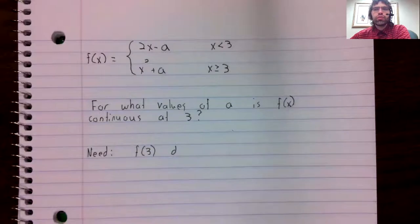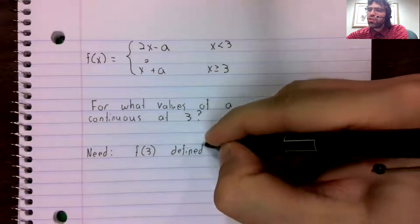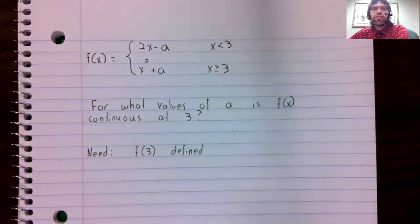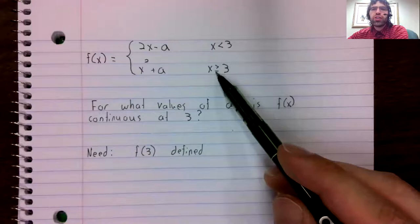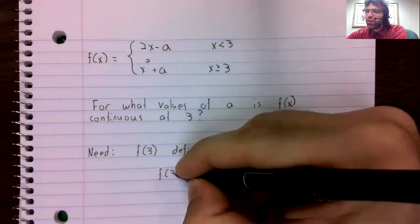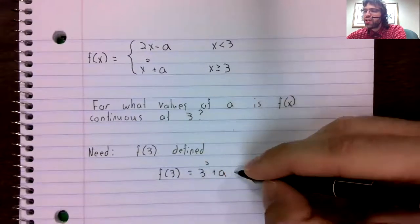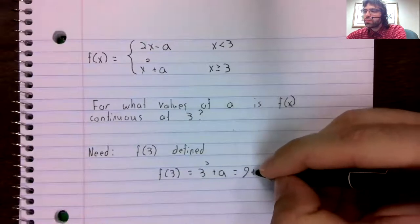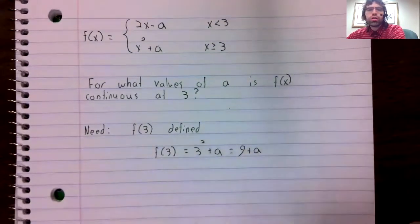And we'll just go through this point by point. What do we need for continuity? Well, to be continuous at three, f of three needs to be defined. And we do have that automatically. Three is greater than or equal to three, so f of three is three squared plus A, or nine plus A. All good so far.